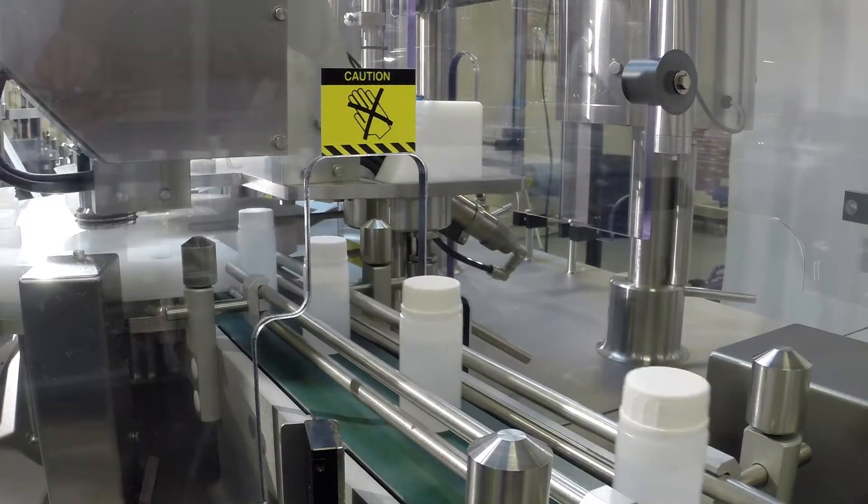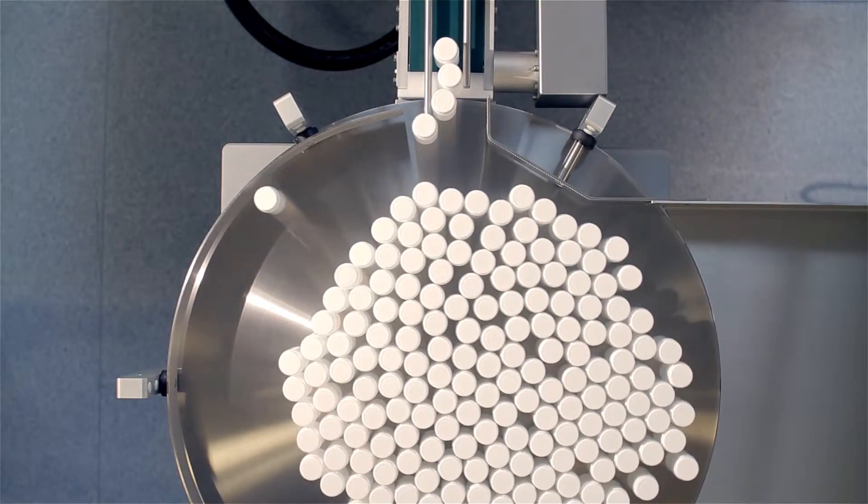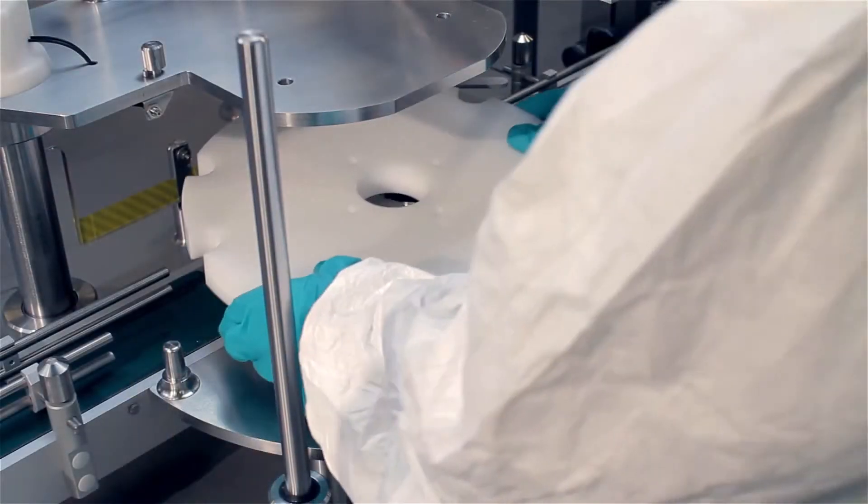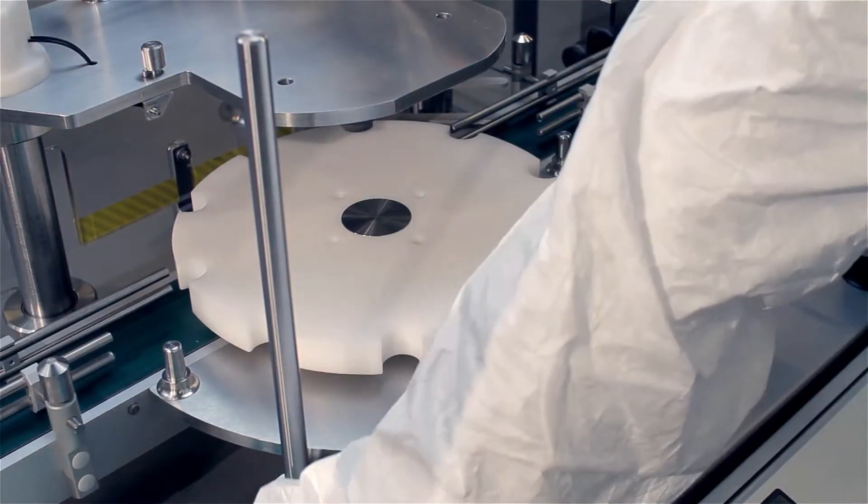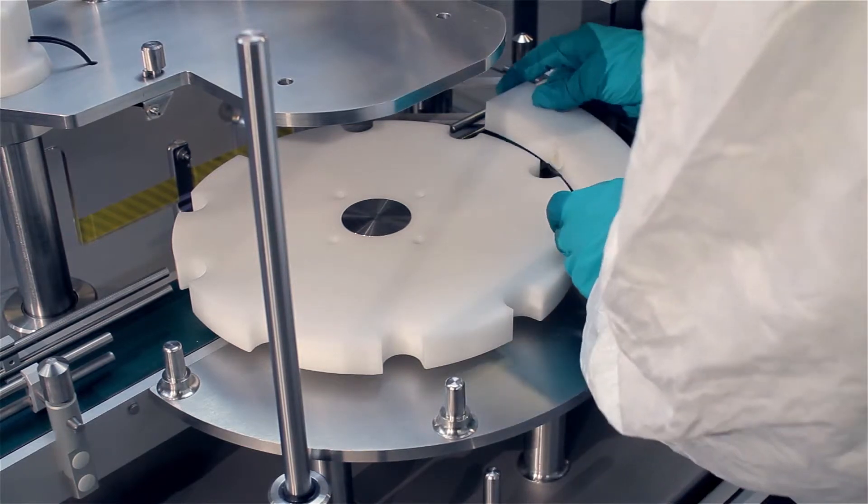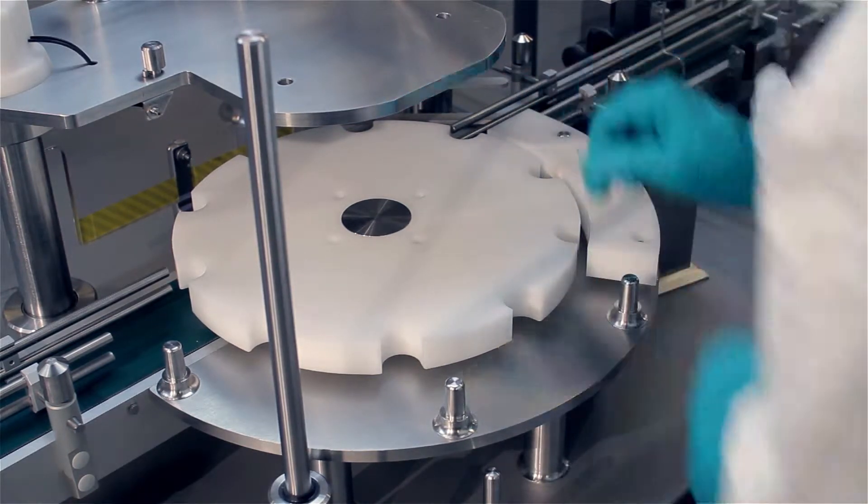A production run can be set up in under 20 minutes and the total capacity per working day is unique for this size of filling and capping solution. The FMB210 is perfect for small to medium sized batch runs.